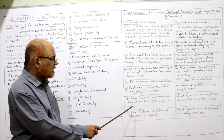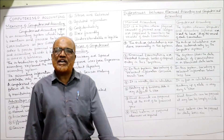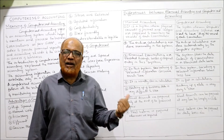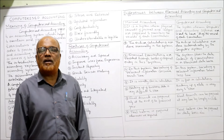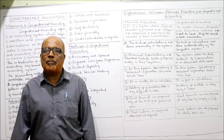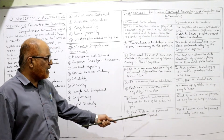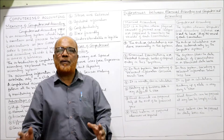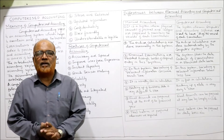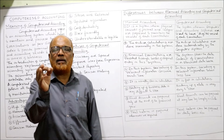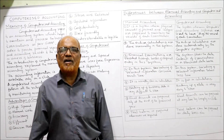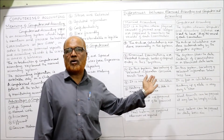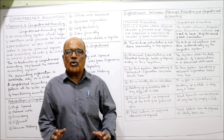In manual accounting, final accounts — income statements and statements of financial position — are normally prepared only at the end of the financial year. But in computerized accounting, financial statements can be prepared at any time with just a click. Lastly, trial balance in manual accounting is prepared whenever required — at the end of the month or year — but in computerized accounting, trial balance can even be prepared every single day.